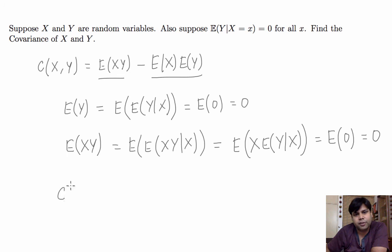So covariance of X, Y is therefore 0. So, if it turns out that expected value of Y given X equals x is 0 for all x, then X and Y are uncorrelated. Thank you.